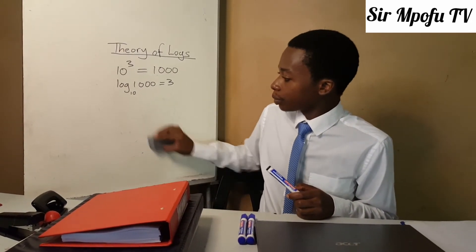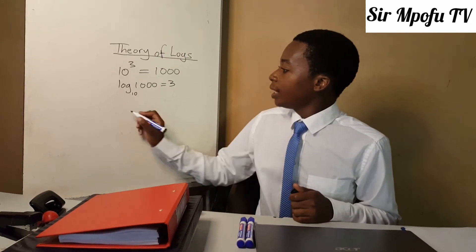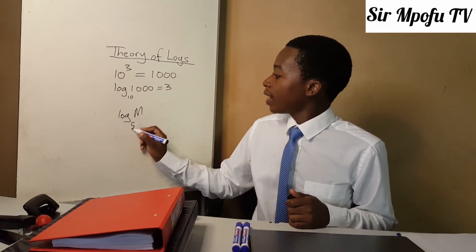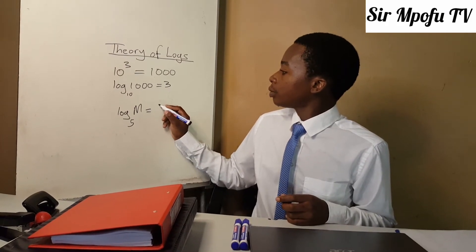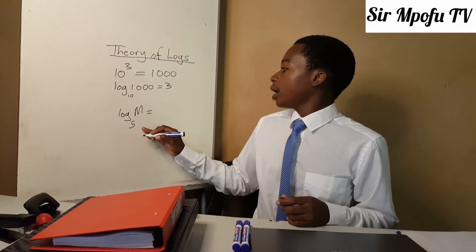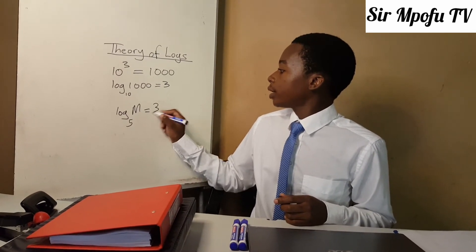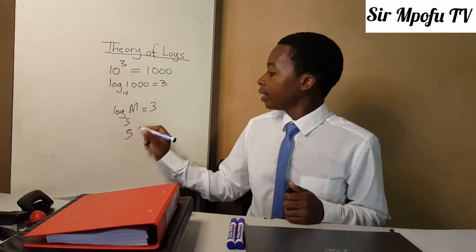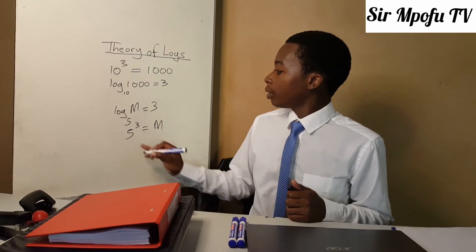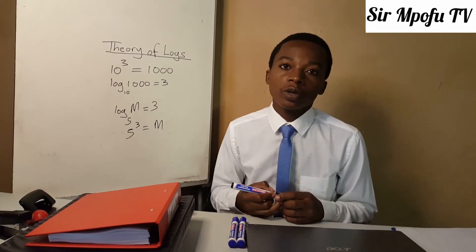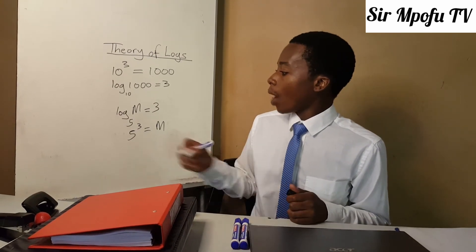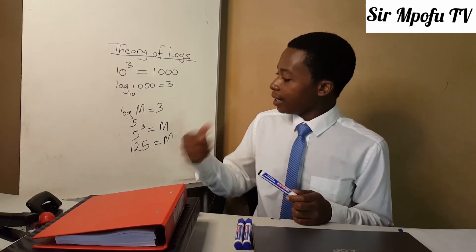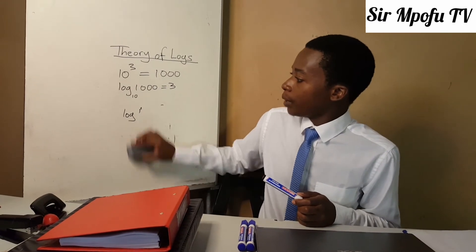Let us do another example. If you are asked to find m, given that log m of base 5 equals 3, what do you do? You know that 5 to the power of 3 equals m. So 5 times 5 is 25, and 25 times 5 is 125. Therefore 125 equals m, so your answer is m equals 125.